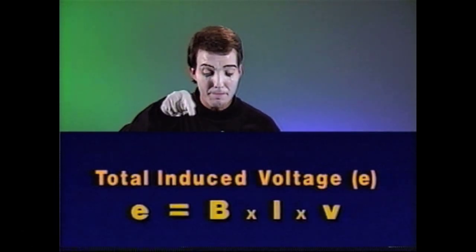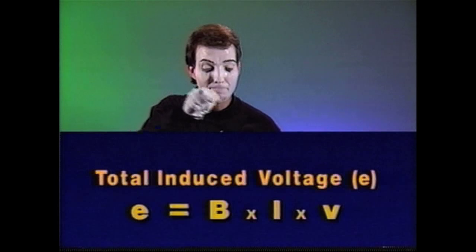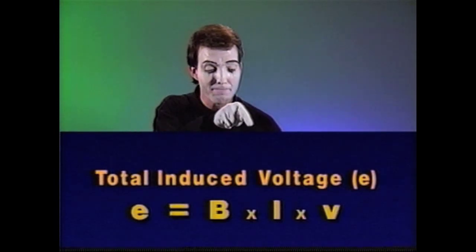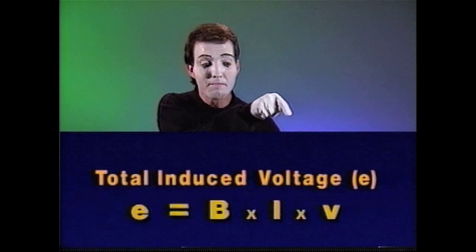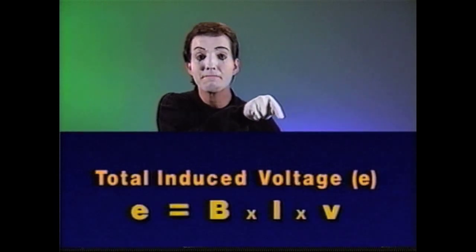B is a measure of the magnetic field strength. L is the total length of the conductor in the magnetic field. And V is the velocity of the conductor.